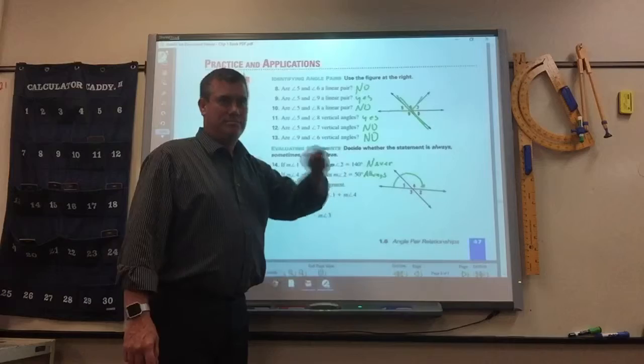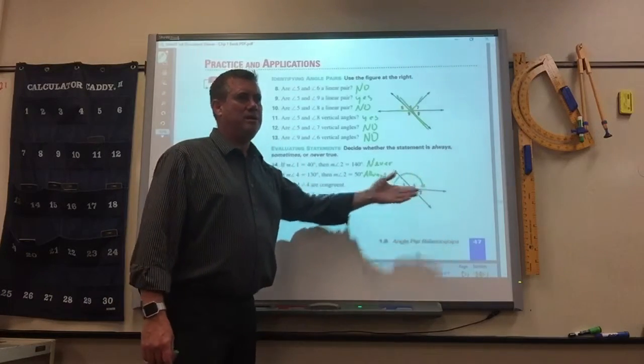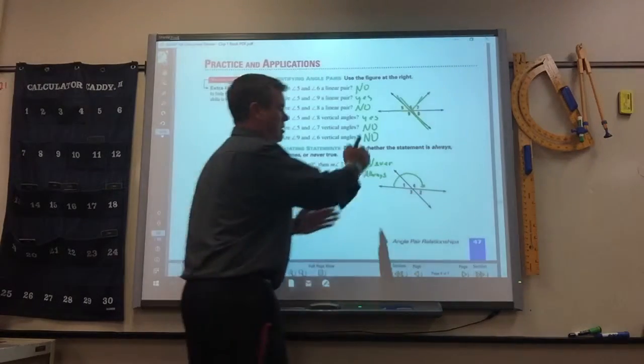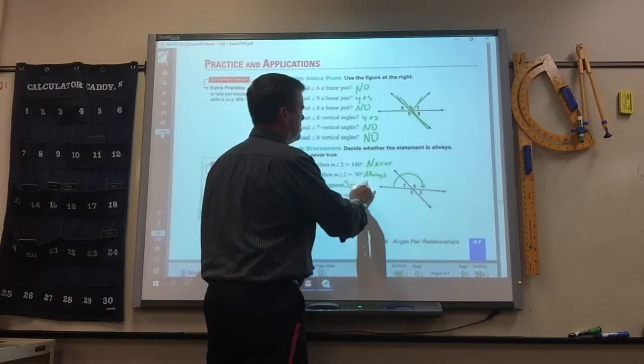100. 100. 90. 90, right? Because 90 and 90 adds up to 180? Yeah. Even though the picture doesn't look like it, you could have two lines that cross that could be 90 and 90. So that one is sometimes.